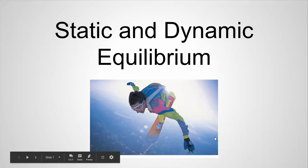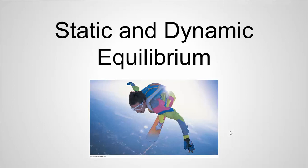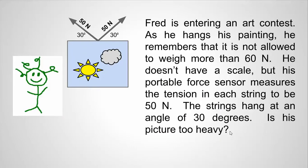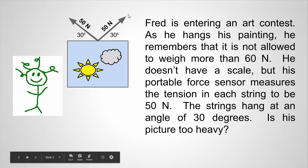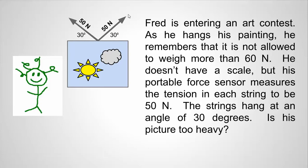In this lesson we're going to talk about static and dynamic equilibrium. Fred is entering an art contest. As he hangs his painting, he remembers he's not allowed to have a painting that weighs more than 60 Newtons. He doesn't have a scale, but he does have a portable force sensor that measures the tension in each string to be 50 Newtons. The strings hang at an angle of 30 degrees from the horizontal. Is his picture too heavy?